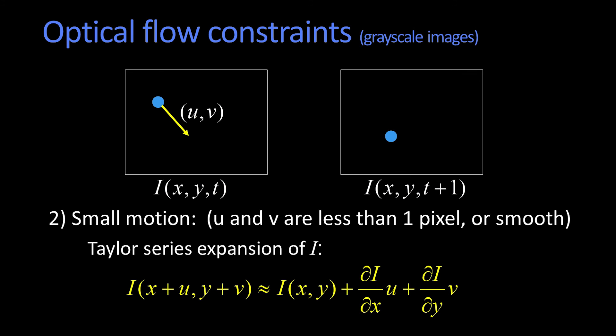So we say that x plus u, y plus v is approximately the original image, plus the gradient in x times delta x, plus the gradient in y times delta y, or v.